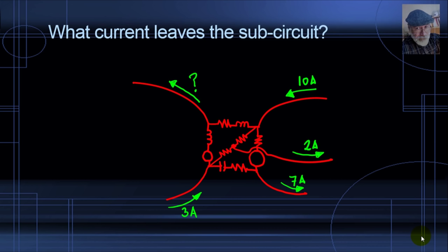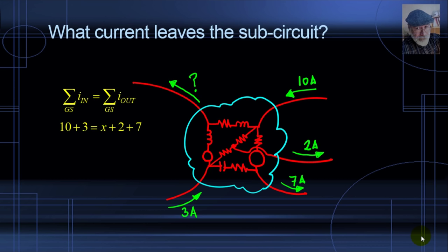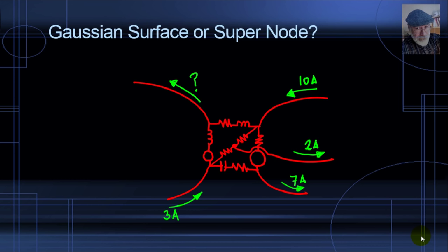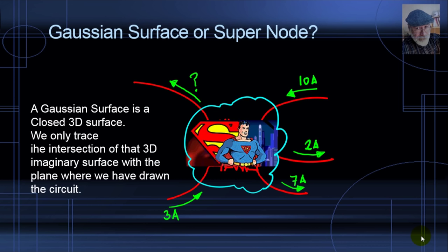Another numerical exercise: what current leaves a sub-circuit through the branch on the top left? Enclose the sub-circuit by a Gauss surface boundary and apply KCL. Currents entering the Gauss surface: 10 and 3. Currents leaving: 2, 7, and the unknown x. Solving gives x = 4 amperes. A Gauss surface can be considered a kind of super node — it is a closed 3D surface, and we trace only its intersection with the plane where the circuit is drawn.